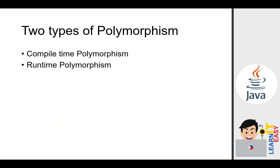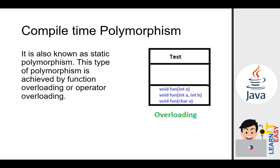There are two types of polymorphism: compile-time polymorphism and runtime polymorphism. Let's talk about compile-time polymorphism first. It is also known as static polymorphism. This type of polymorphism is achieved by function overloading or operator overloading. We've done overloading before — overloading is a form of compile-time polymorphism where we make a single method call but get different outputs based on what parameters are passed.